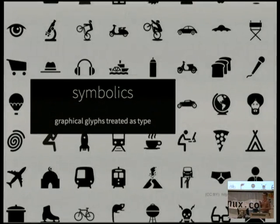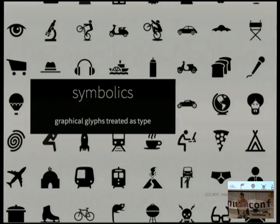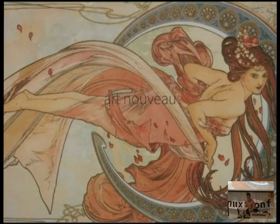Symbolics are a great tool because they actually follow typographic rules more than anything else. You can appraise the placement of a symbolic glyph as if it is just a random glyph of text. Symbolics are fantastic — they're international. Sometimes the visual metaphors are a bit off, but it's a fantastic tool to use.